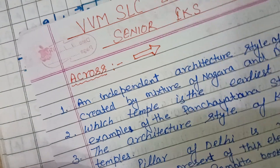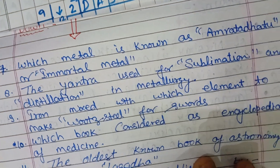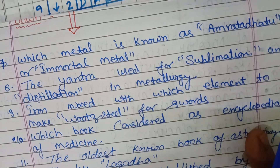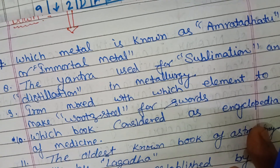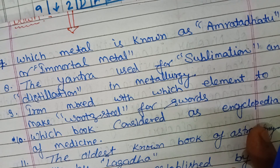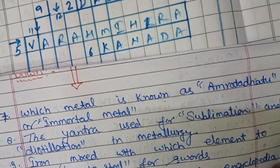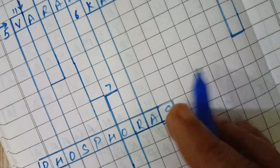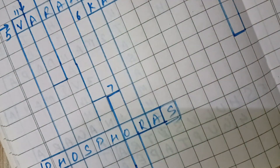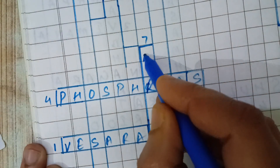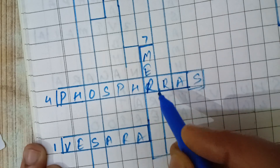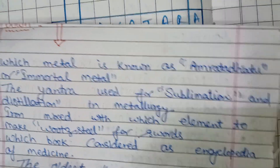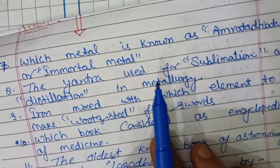Now the downward questions. Seventh downward: which metal is known as Amrit Dhatu or Immortal Metal in ancient Indian alchemy? This is known as Mercury — M-E-R-C-U-R-Y.